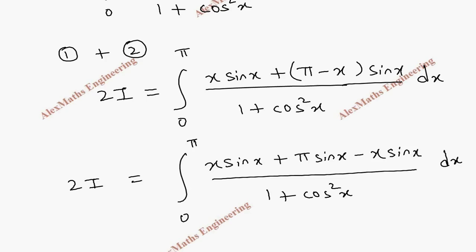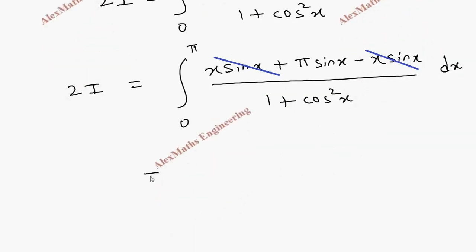So here, we can cancel x sin x minus x sin x. And now, the constant π can be taken outside the integral. So π integral 0 to π. And we have sin x by 1 plus cos square x dx. So 2i we got.